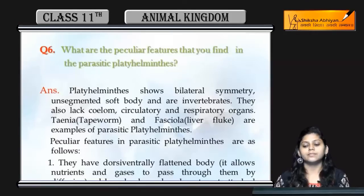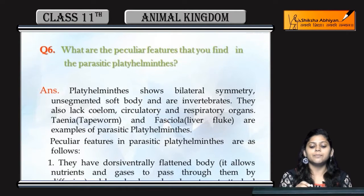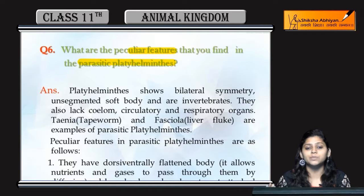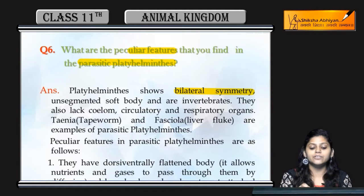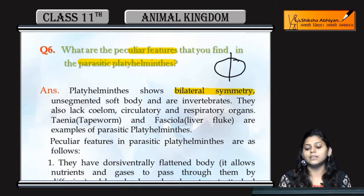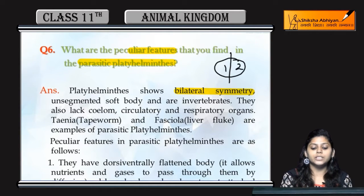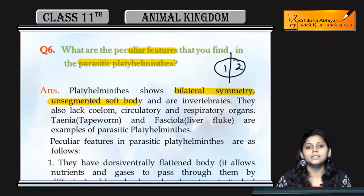The next question is: what are the peculiar features found in parasitic helminths? Parasites are organisms that live on other organisms, absorb nutrients from them, and cause harm to the host. They have bilateral symmetry — when you cut the organism in any transverse or longitudinal section, it divides into two equal halves. Their body is unsegmented, meaning no segments are present, and they have a soft body.